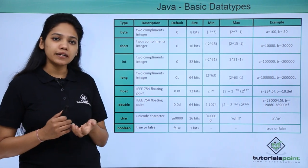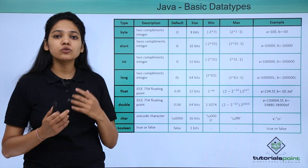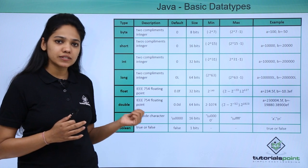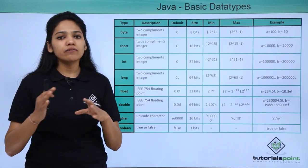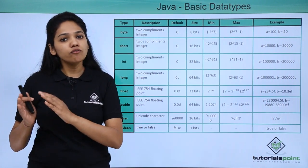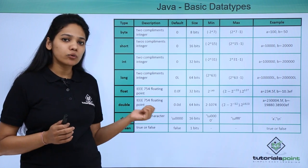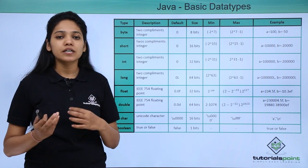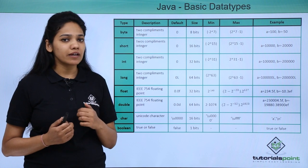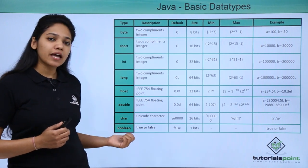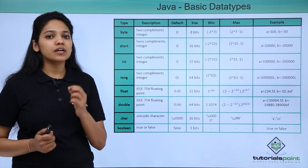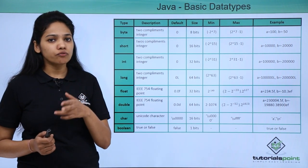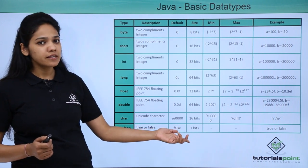Next are float and double, which allow you to store decimal values. By default in Java, double is used to store decimal values, while float is used to save space in arrays of floating point numbers. One important point: float and double cannot be used for precise values — for example, you cannot store currency values with them. The last two are char and boolean. Char enables you to store a single character, and boolean will either return true or false. The default value of boolean is false.